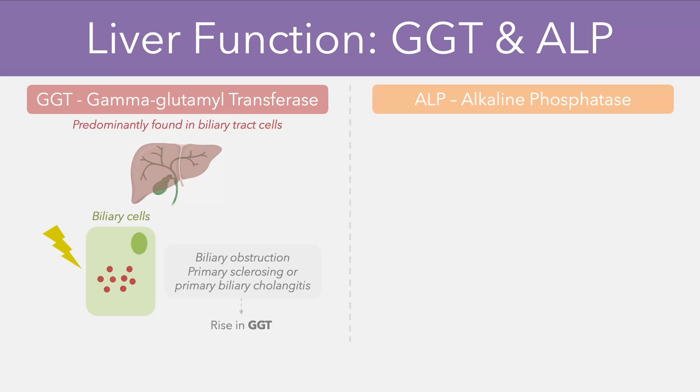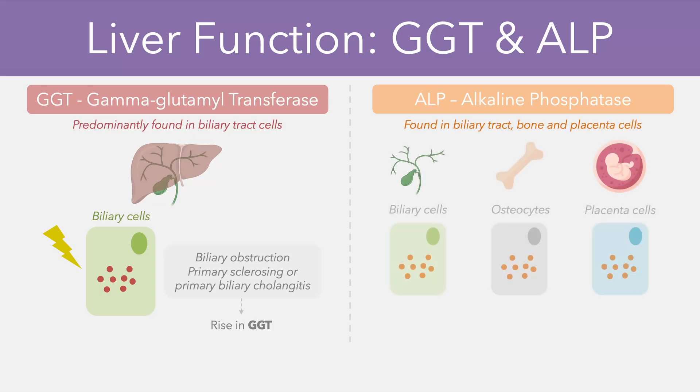In comparison, ALP is found in the biliary tract, bone, and placenta — so the biliary cells, osteocytes, and placenta cells. And again, damage to any of these cell types will result in a rise in ALP.